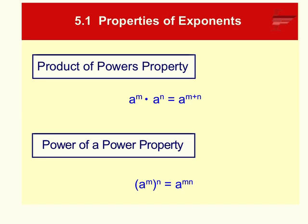Basically, if you are multiplying the same base, that means that we will add our exponents. So an example of this could be 4 squared times 4 cubed — you're going to keep that same base of 4, and you add your exponents, so it's going to be 4 to the fifth power.